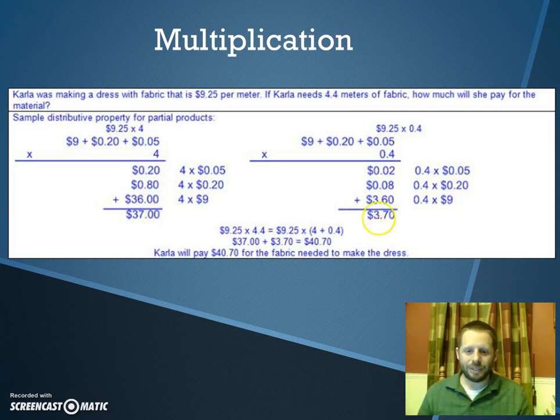When you're done, don't forget, you still have to add the two parts together. This is the 4 meters, this is the 0.4 meters of material. Add it together to get the total cost. You get $40.70 for the total cost of materials.